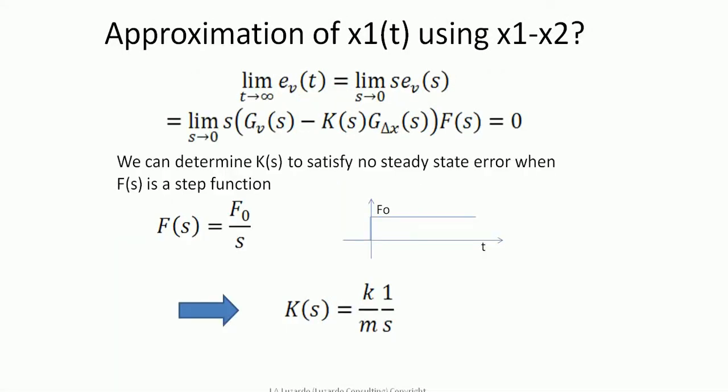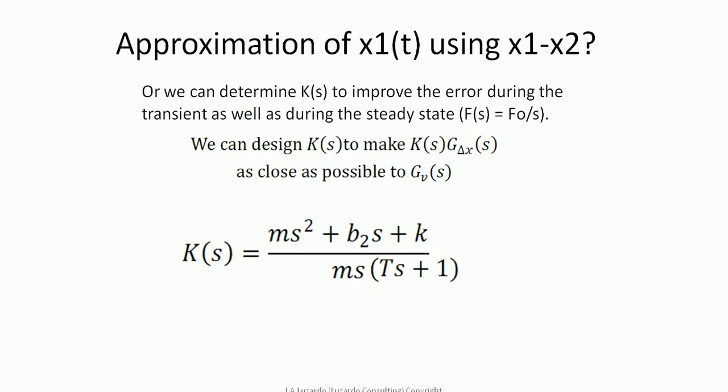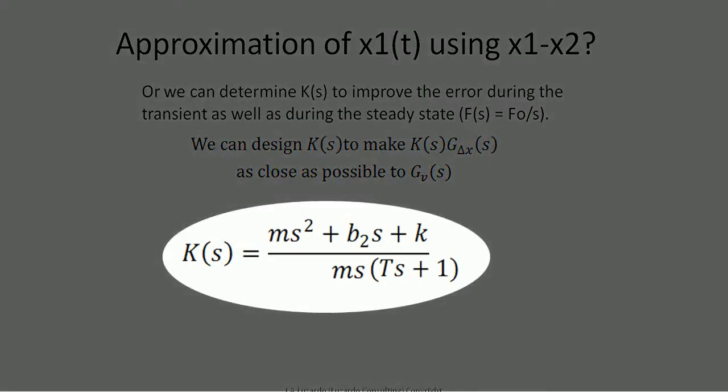We mentioned two filters K(s). The first one is indicated here. This one is an integrator with a gain that guarantees zero steady-state velocity error when the input is a step function. And this is the second one, derived from the zeros of the system. The parameter T is a design parameter that needs to be small enough.